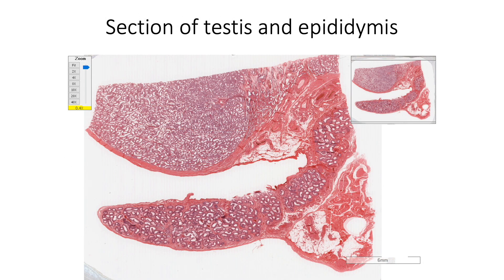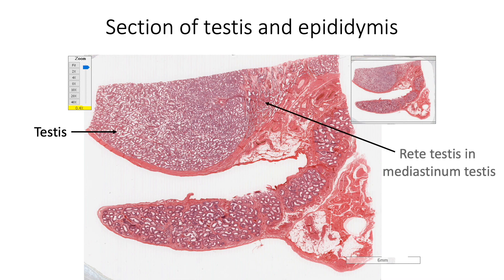The testes are a pair of gonads suspended in the scrotum by the spermatic cord. They are the primary sites for production of spermatozoa and also act as endocrine glands because they secrete testosterone. Here we are also seeing a section of rete testis in the mediastinum as well as a section of epididymis.